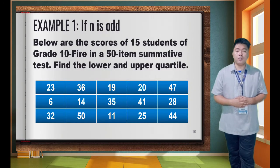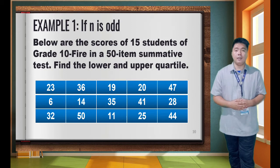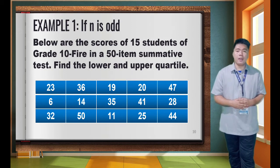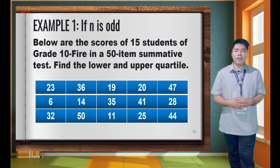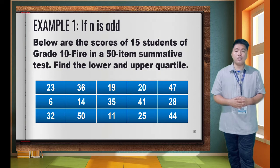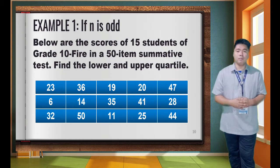To gain more knowledge on using the Mendenhall and Sincich method, let's have an example. Example 1: the number of data is 15. Below are the scores of 15 students of grade 10 in a 50-item summative test. We need to find the lower quartile Q1 and the upper quartile Q3.